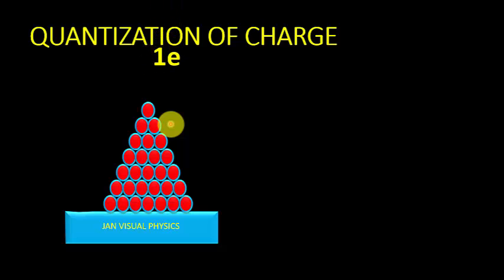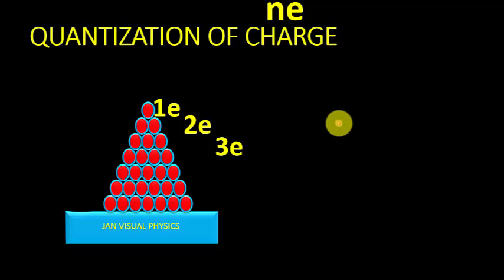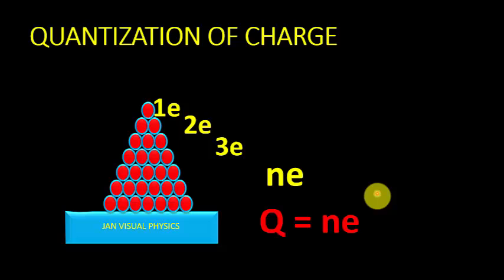Total charge on a body may be equal to one electronic charge, two electronic charges, three electronic charges, or n times electronic charge. So the total charge on a body may be equal to n times e, or an integral multiple of electronic charge. This is known as quantization of charge.